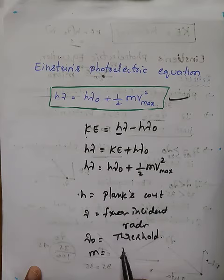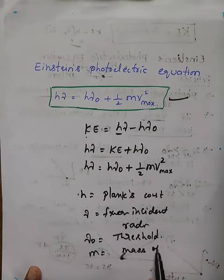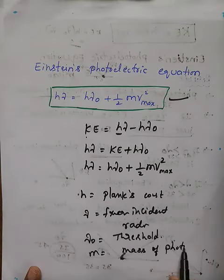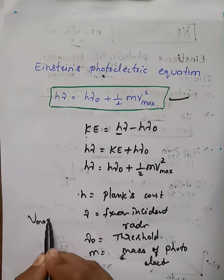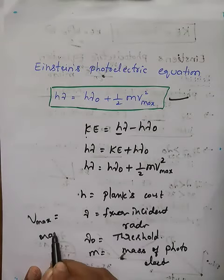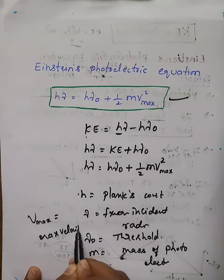m is the mass of the photoelectron. Then v maximum is the maximum velocity of the photoelectron.